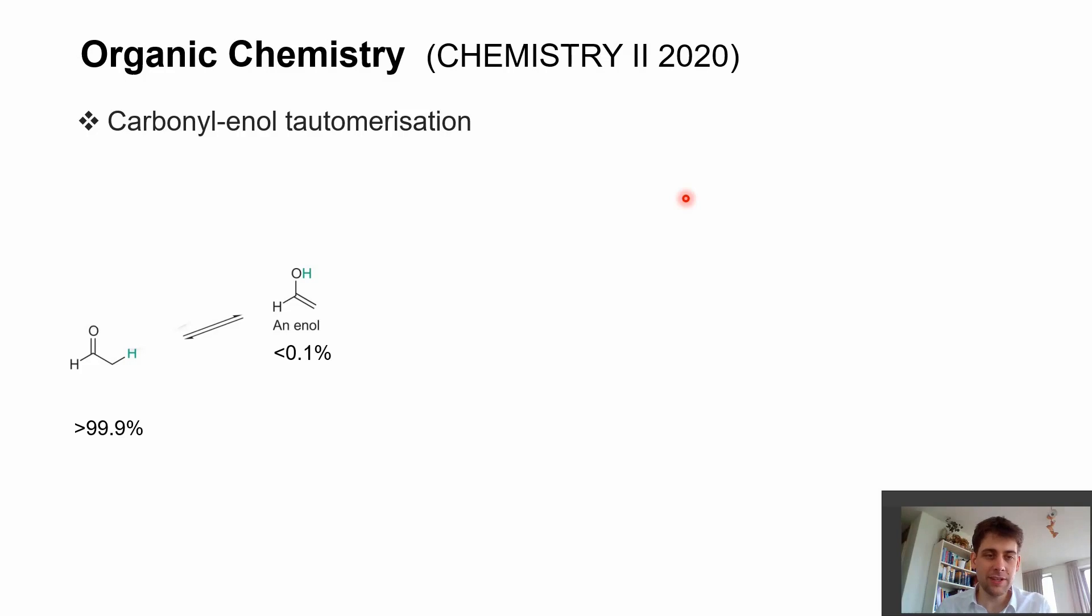We have previously talked about the nucleophilic addition reactions towards carbonyl components, and the other reaction that carbonyl components can undergo are these alpha substitution reactions. The basis for these alpha substitution reactions is the carbonyl-enol tautomerism, where a carbonyl component has an alpha acidic proton attached at the alpha carbon atom.